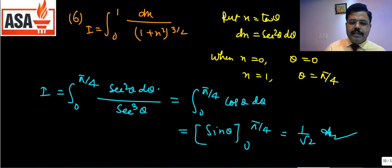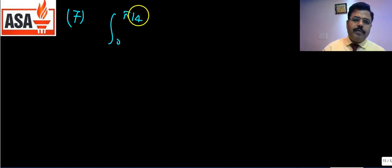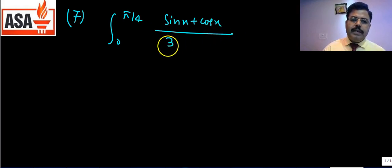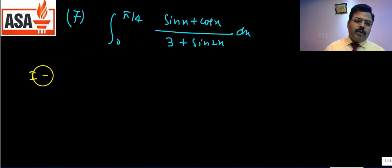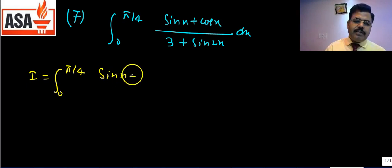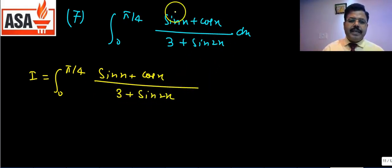So the answer is 1/√2. Now question 7: integrate (sinx + cosx)/(3 + sin2x) from 0 to π/4.